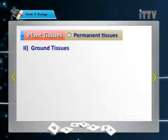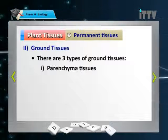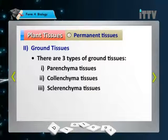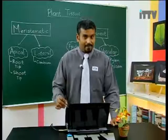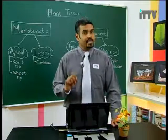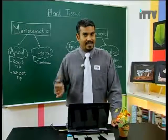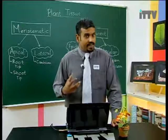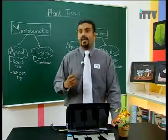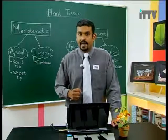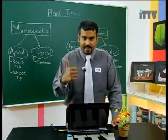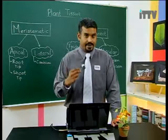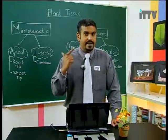Next we have ground tissues. There are three types of ground tissues: parenchyma, colenchyma, and sclerenchyma. You must remember the names and spellings of each of these cells as they are tested in exams. Remember them in this order: parenchyma, colenchyma, and sclerenchyma.